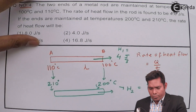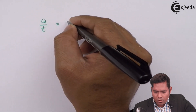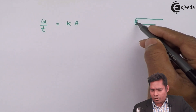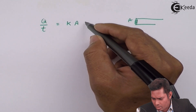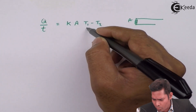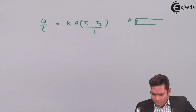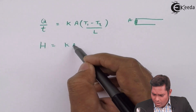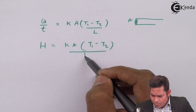To find H2, consider the equation for the rate of flow of heat: the quantity of heat flowing per second H equals some constant K times the cross-sectional area A of the rod, times the temperature gradient (T1 minus T2) over the length L. This is the formula for rate of flow of heat. Sometimes (T1 - T2) is called delta T.